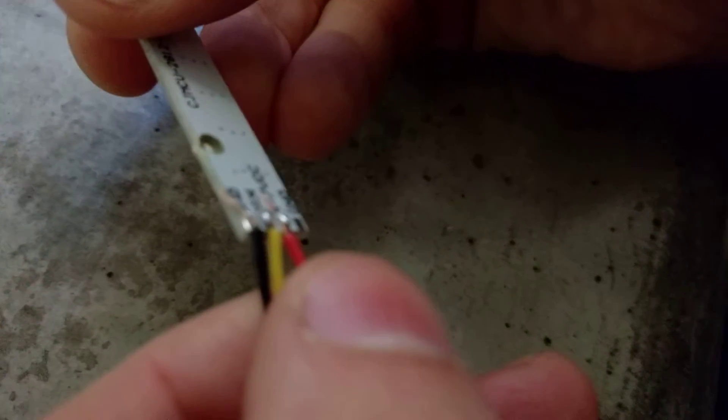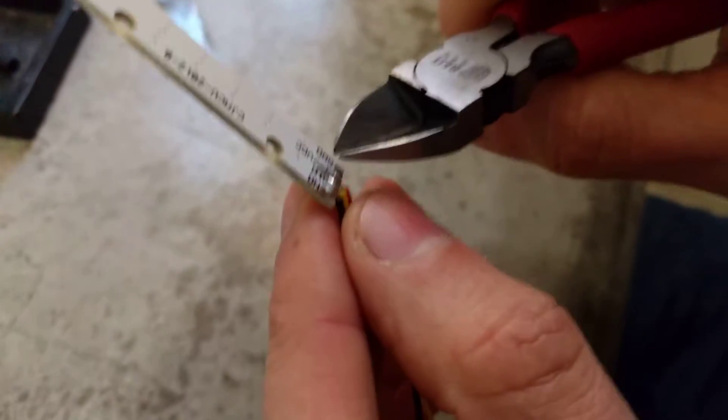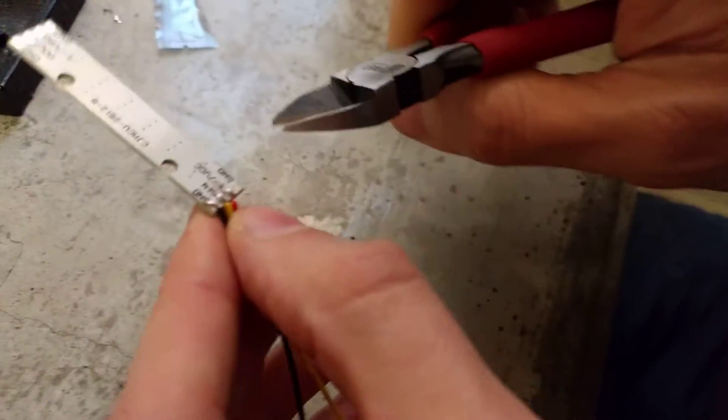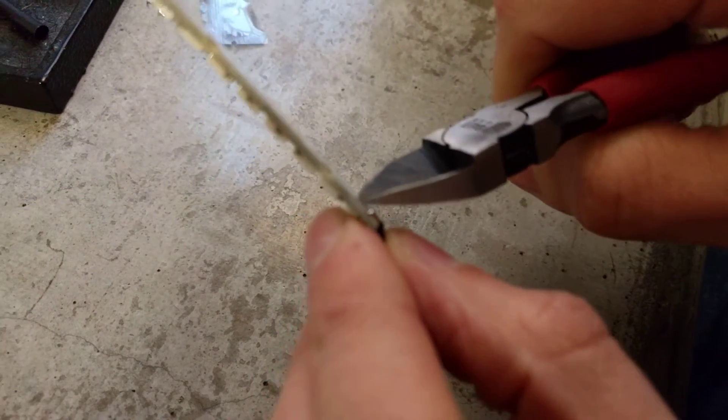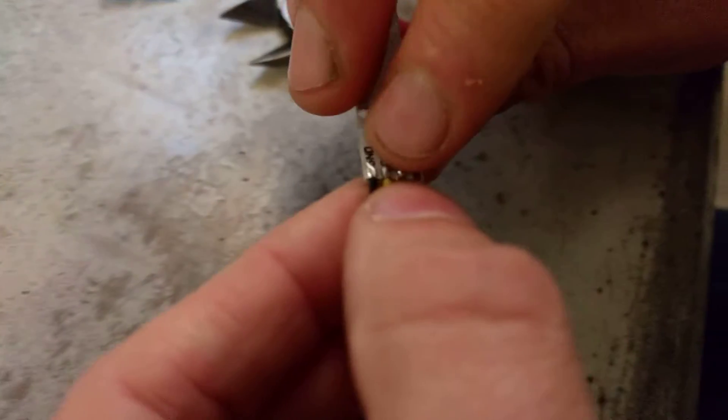So then what you can see is that we've got our three wires joined in there pretty well and we just take our wire cutters, take the ends off so that we don't get any dodgy joints and then we can test it to make sure it works.